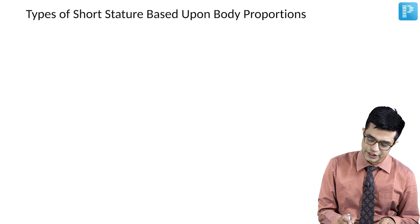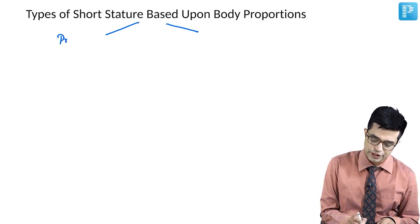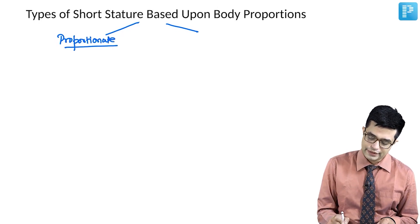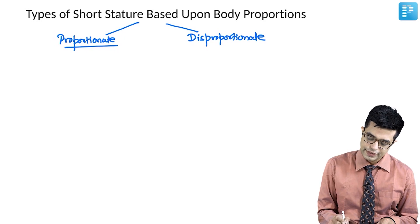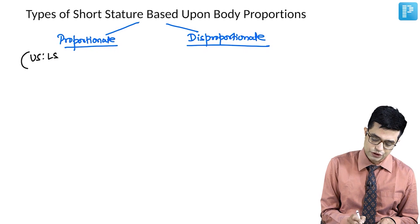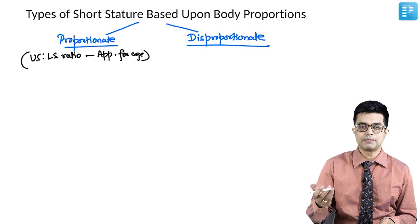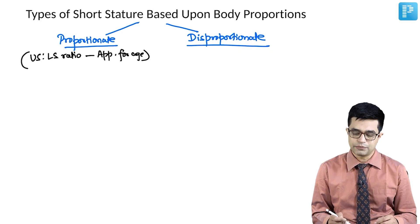Types of short stature based upon body proportion can be divided into two parts: proportionate short stature and disproportionate short stature. In proportionate short stature, the upper segment to lower segment ratio is appropriate for age, whereas in disproportionate short stature, the upper segment to lower segment ratio is not appropriate for age.